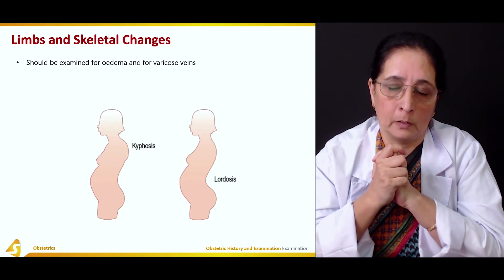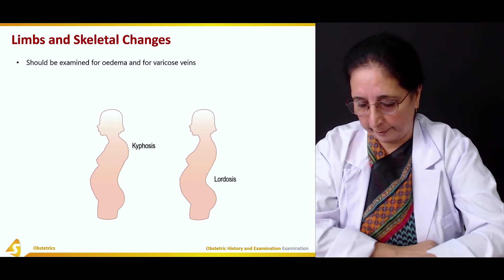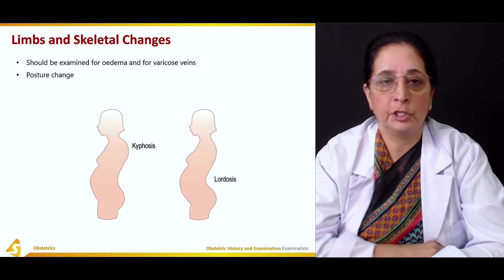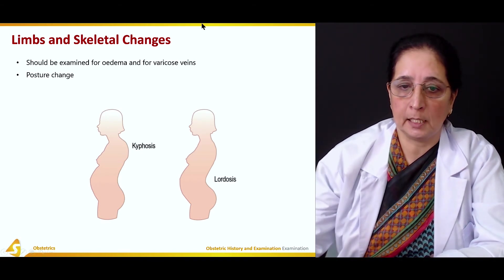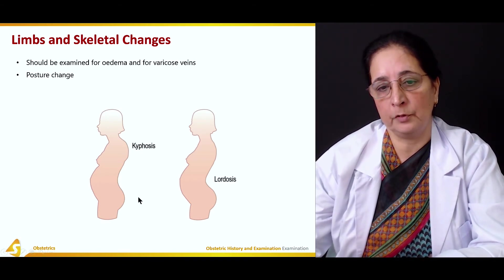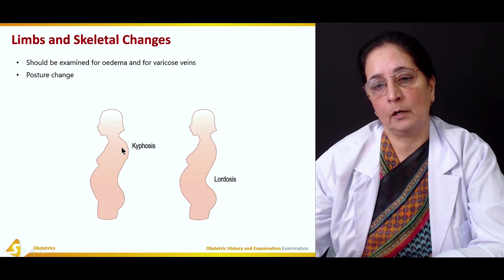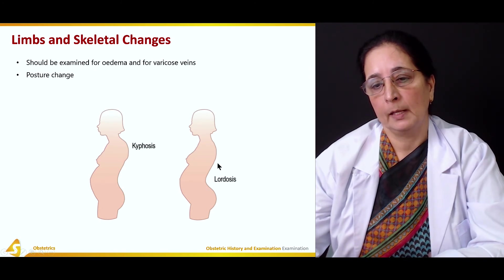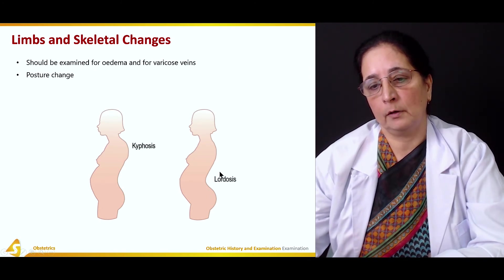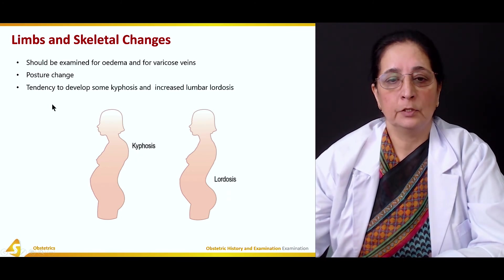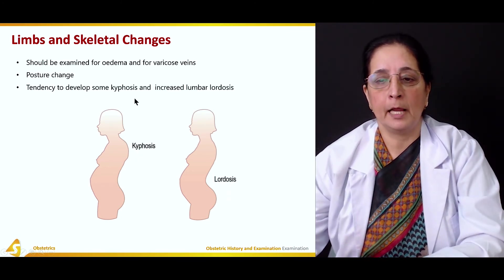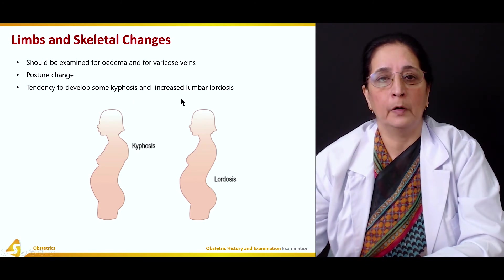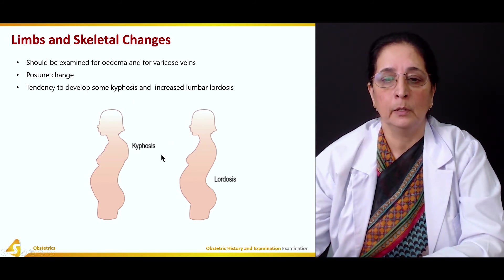Varicose veins — dilated veins — also occur because of the gravid uterus. Posture changes are common, including kyphosis, which is a humpback curve in the thoracic spine, and lumbar lordosis, which is an inward curve of the lumbar spine. The tendency to develop kyphosis and lumbar lordosis is present during pregnancy.